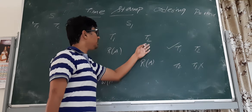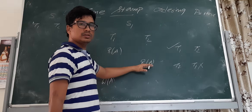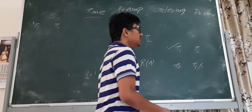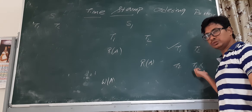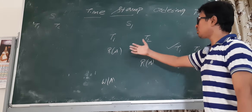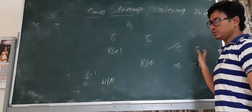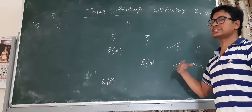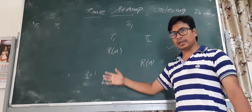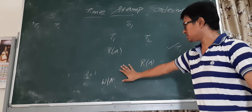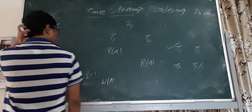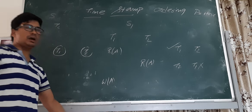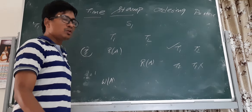T2 to T1 ordering is not allowed because T2 entered the system later, so T2 should not execute before T1. Always T1 must execute first, then T2. If an operation forces a T2 → T1 ordering in the polygraph, that creates a conflict. We will draw the polygraph for this example — T1 and T2 are the two nodes.